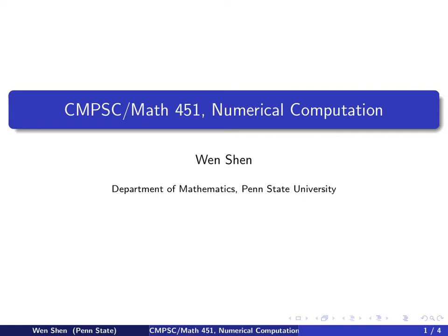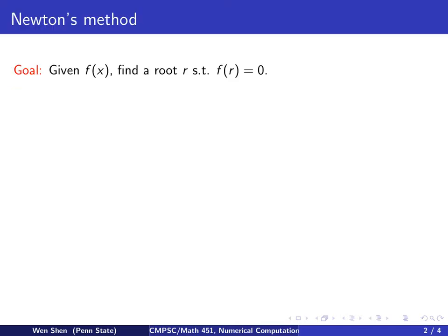Numerical Computation, Chapter 5, Video 6. We will now learn about Newton's Method. Our goal is still the same. Given a continuous function f of x, we want to find the root such that f of r equal to 0.